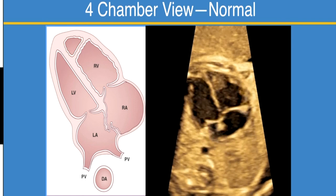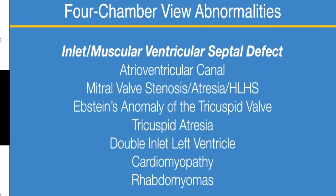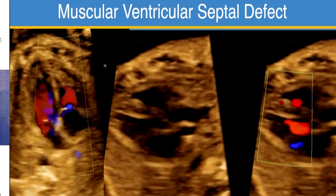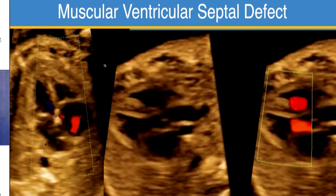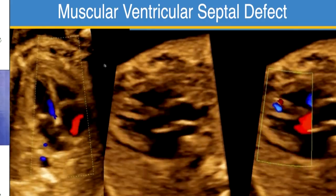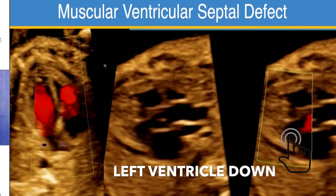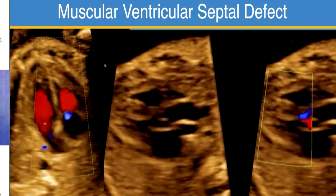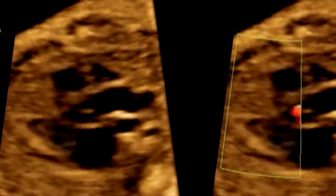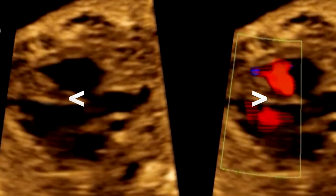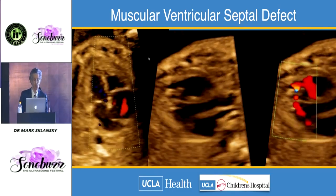The most common four-chamber view abnormality, besides an echogenic focus, is an inlet or muscular ventricular septal defect. The concept of being perpendicular rather than parallel applies both for 2D imaging and for color Doppler. You want to be perpendicular to the septum — this is my favorite view with the LV on the bottom — and color also needs to be perpendicular to avoid missing the defect.